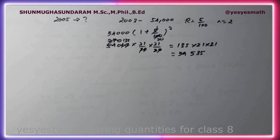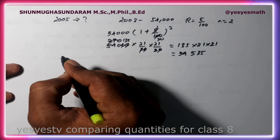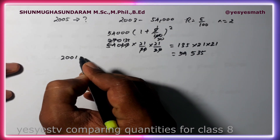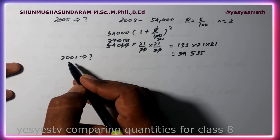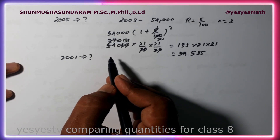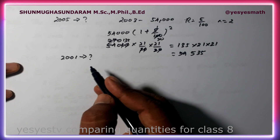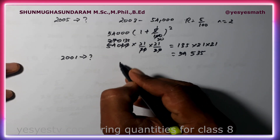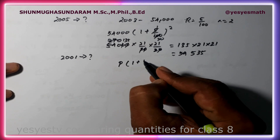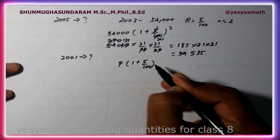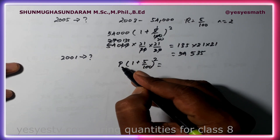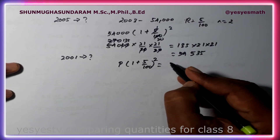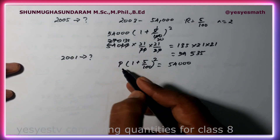You can use a calculator for the multiplication. This is the answer. The population rate of increase formula is 1 plus 5 by 100, and the population in 2003 is 54,000.